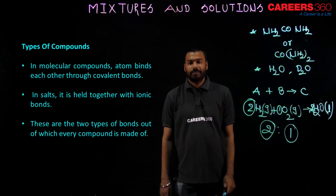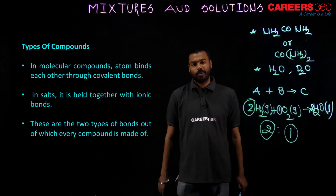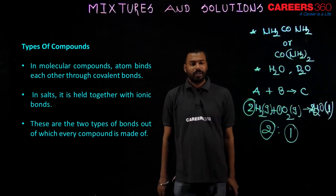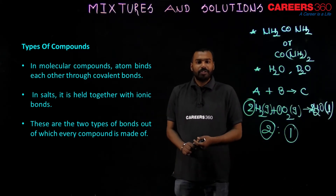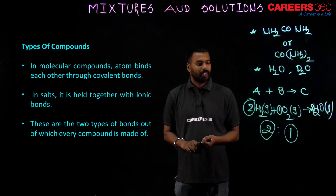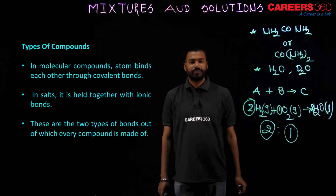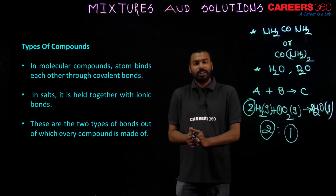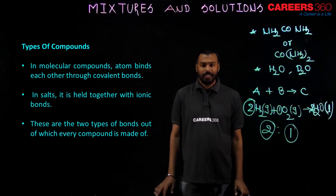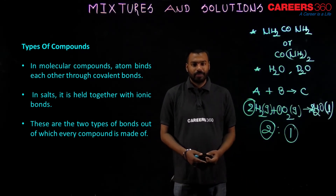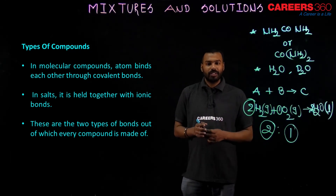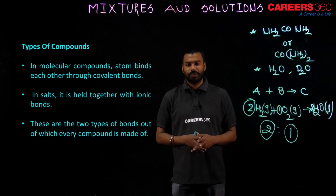In molecular compounds, atoms bind each other through covalent bond. What is a covalent bond? A covalent bond is a bond formed by the sharing of electrons. This topic of bonding is not deeply covered in this class, but covalent bond means a bond formed by the sharing of electrons.